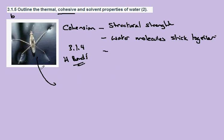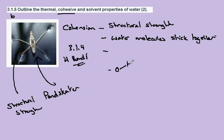In the image here we have a common insect called the pond skater. The pond skater is able to move across the surface of the water without falling beneath the surface. There is structural strength on the surface of the water sufficient to support the mass of the pond skater. If we look at the surface of the water, we have water molecules arranged like this.